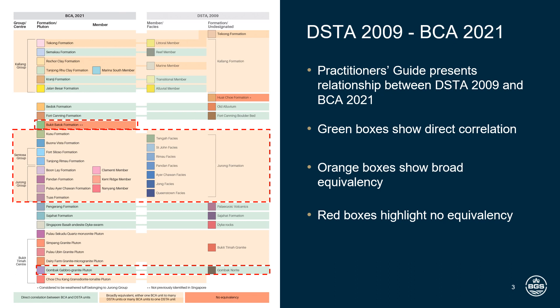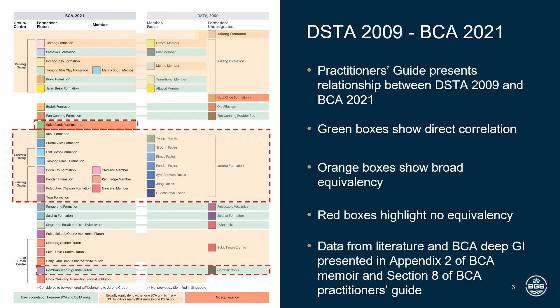The important thing to note is that often the equivalency is not at the same level. For example, the DSTA Jurong formation cannot be directly related to units within the BCA stratigraphy at the formational level — it's broadly equivalent to eight formations in the BCA stratigraphy. Where possible, data from the literature have been collated alongside BCA deep ground investigation data for each geological unit in Appendix 2 of the Geological Memoir and Section 8 of the Practitioner's Guide, though this will frequently be at the centre level for intrusive igneous units and the group level for sedimentary units.